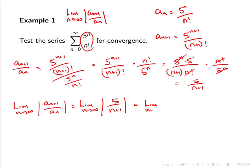Which simply is the limit as n goes to infinity of 5 over n+1, as 5 over n+1 is already positive.